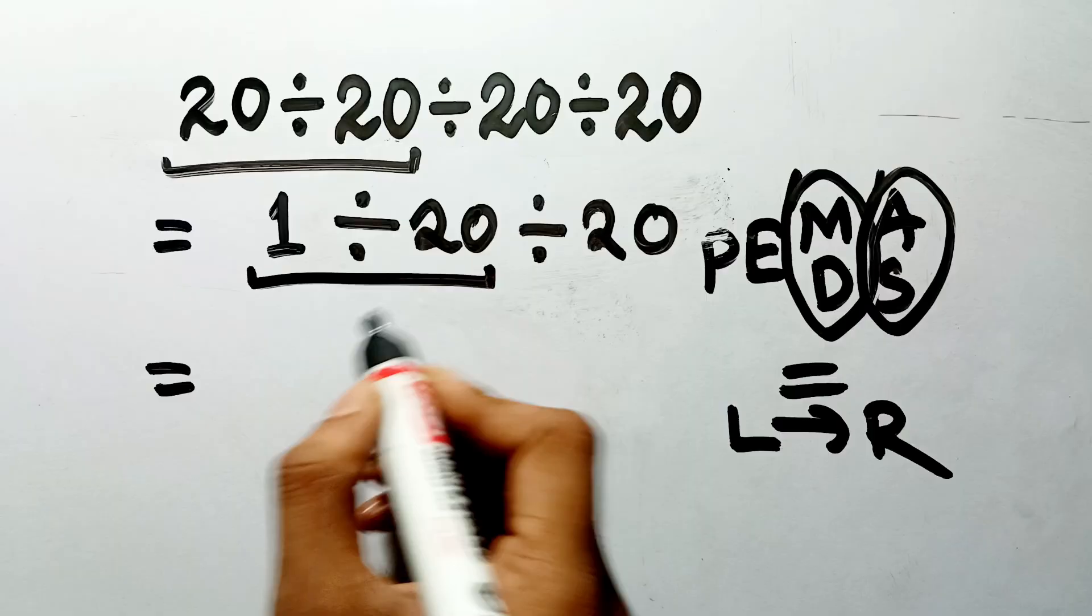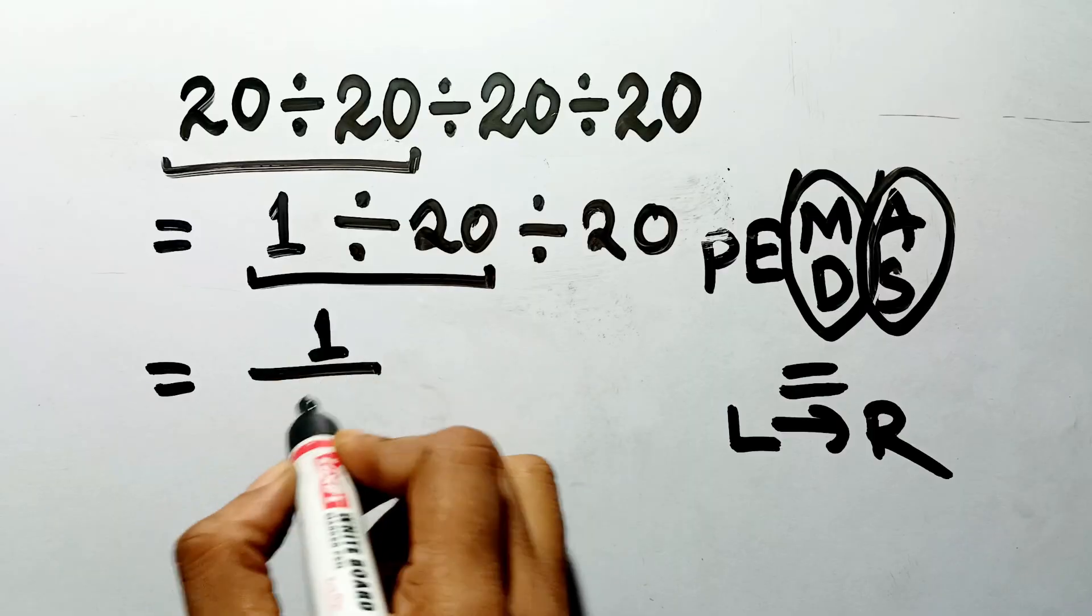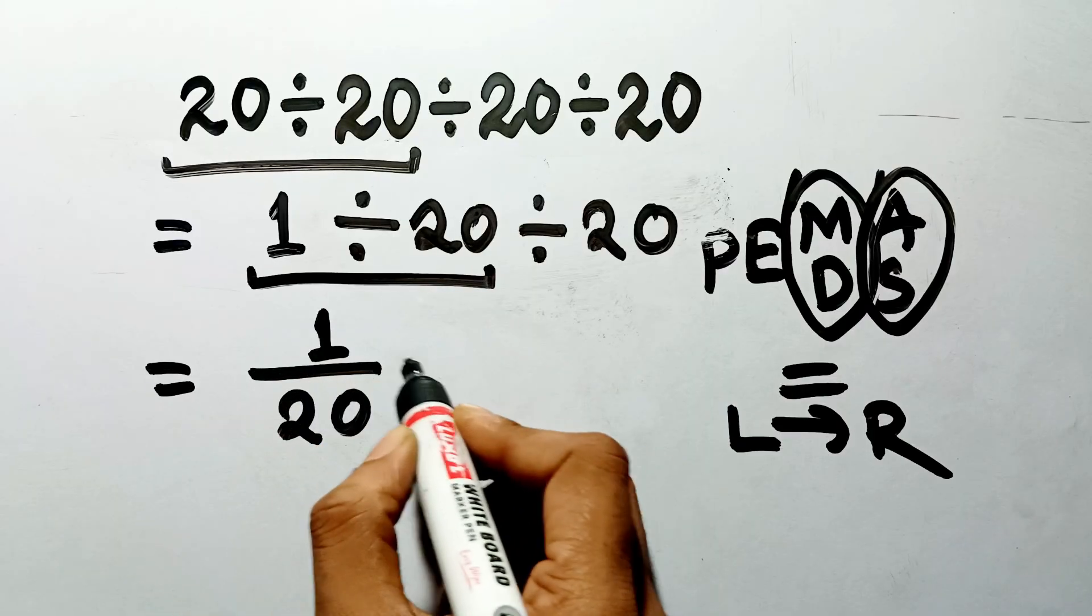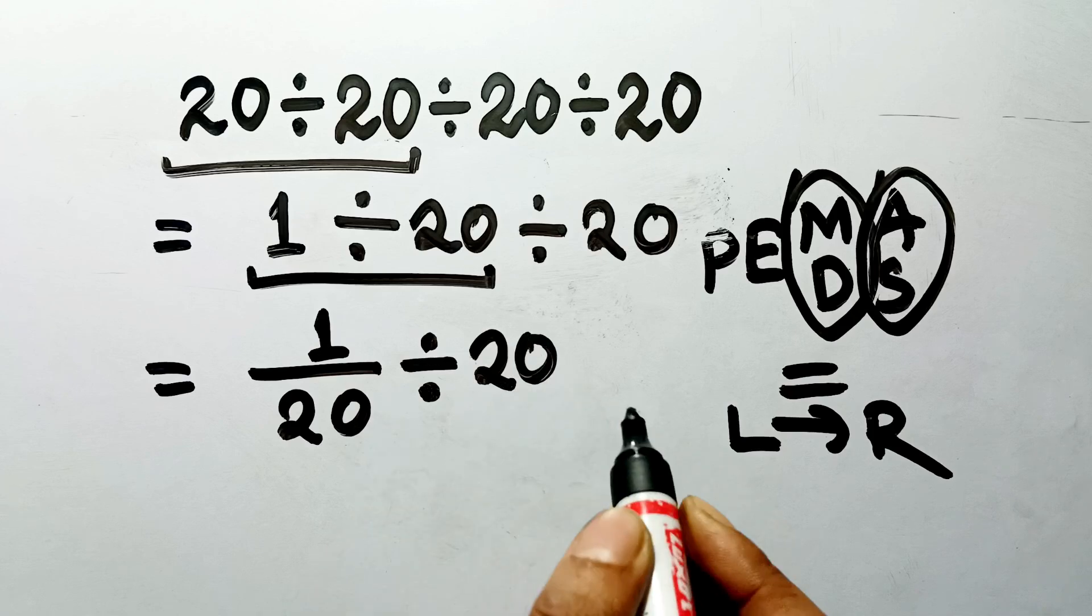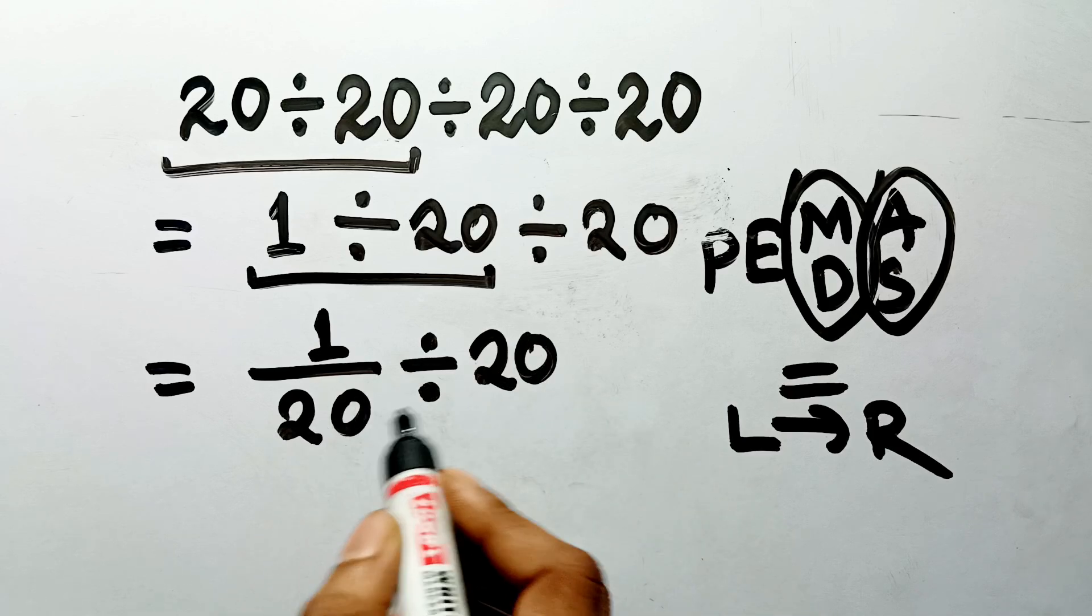1 divided by 20 gives us the fraction 1 twentieth. So, we have 1 twentieth divided by 20. Now, we have just one division left to solve.